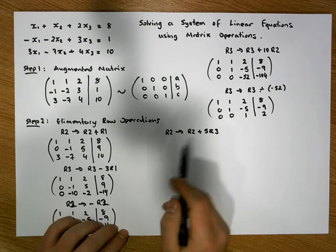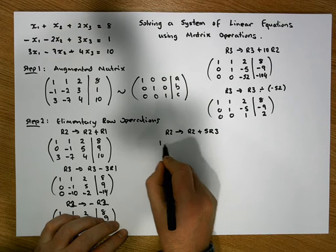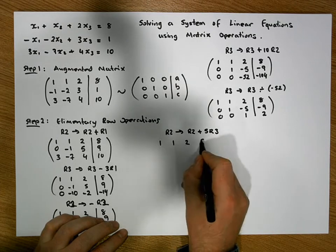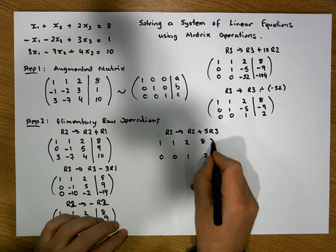The only update operation now is to row 2, so the matrix is 1, 1, 2, 8, 0, 0, 1, 2.